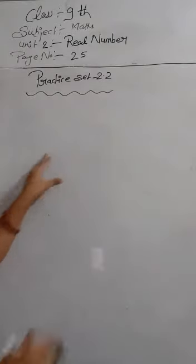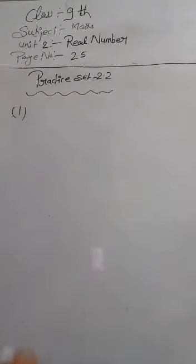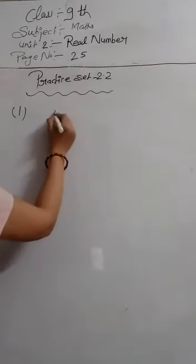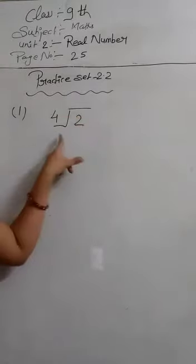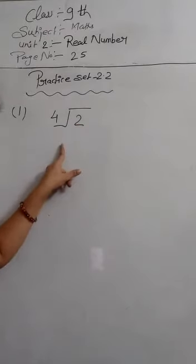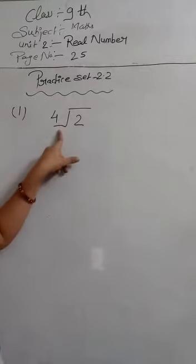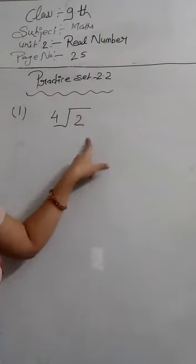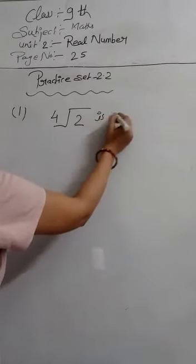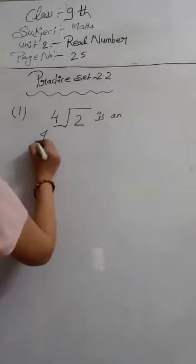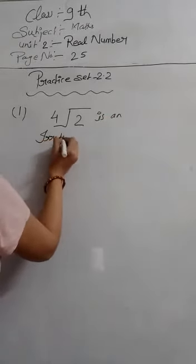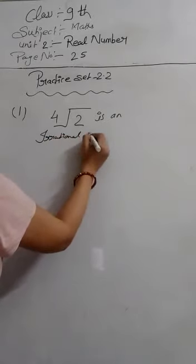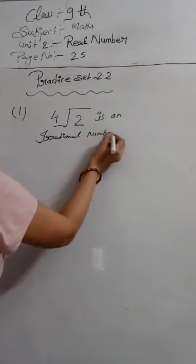So the first question here is: show that 4√2 is an irrational number. We have to show that 4√2 is an irrational number.